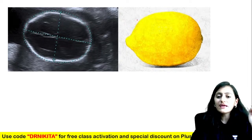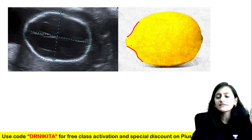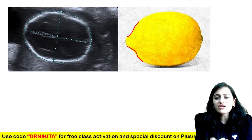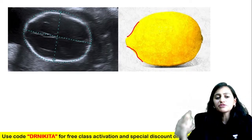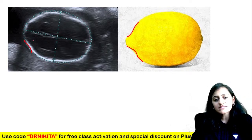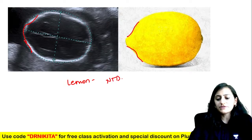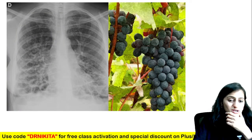The lemon sign — the lemon is round but anteriorly has a concave surface. Because of the pull of the structures, the brain is not giving pressure on the frontal bones, so you see concavity in the frontal bones like a lemon. That is the lemon sign in neural tube defects.